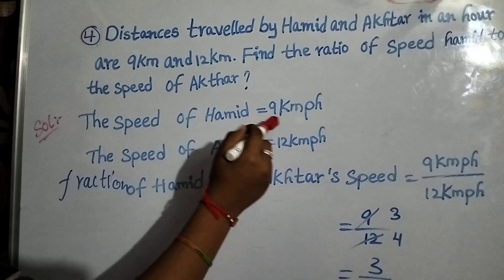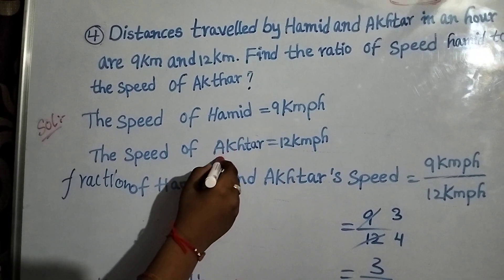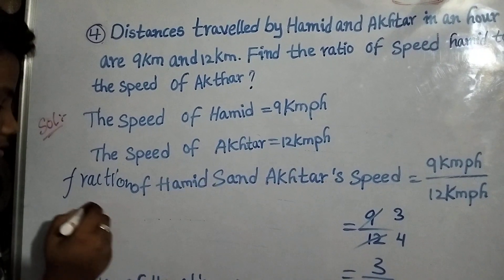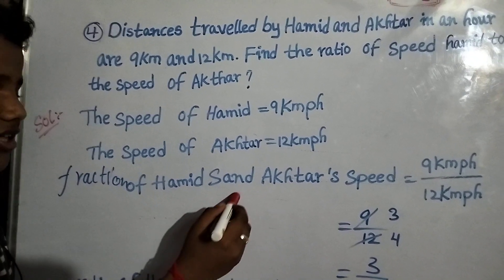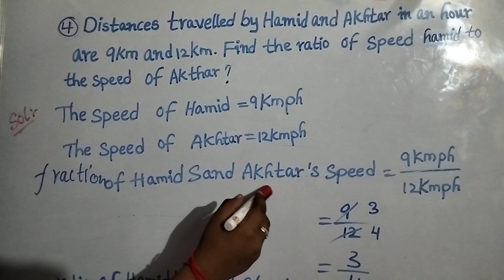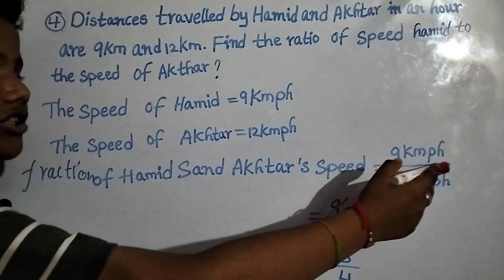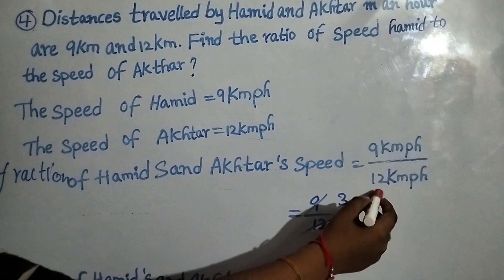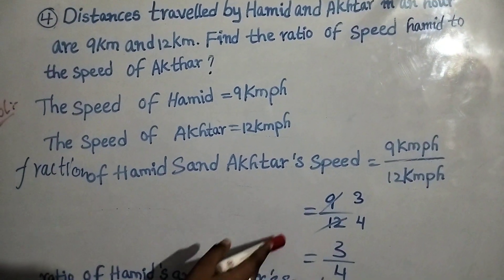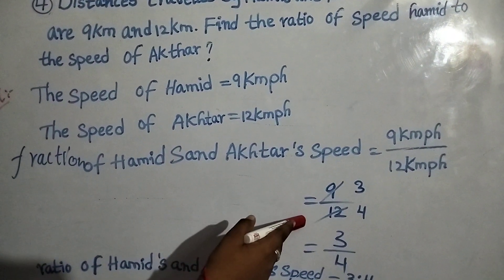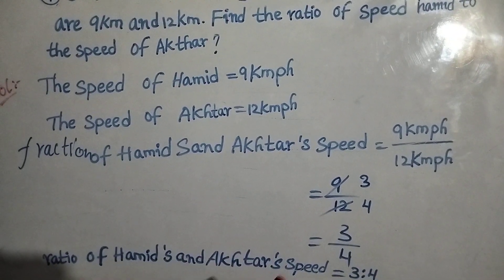Hamid travels 9 km per hour and Akhtar travels 12 km per hour. The fraction of Hamid's and Akhtar's speed equals 9 km per hour divided by 12 km per hour, which is equal to 9 by 12.